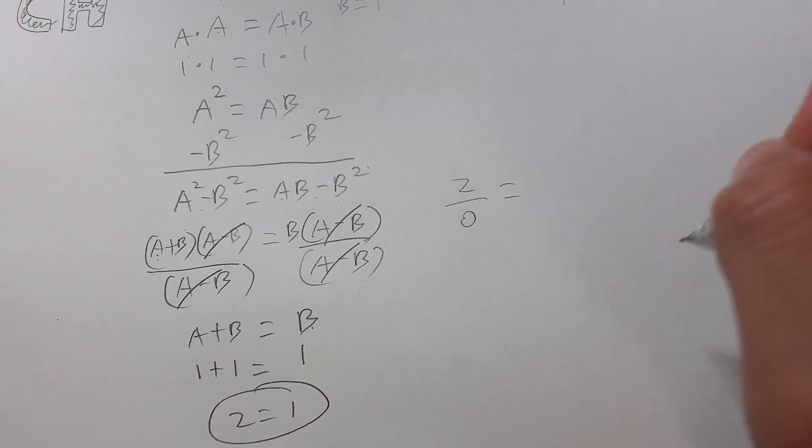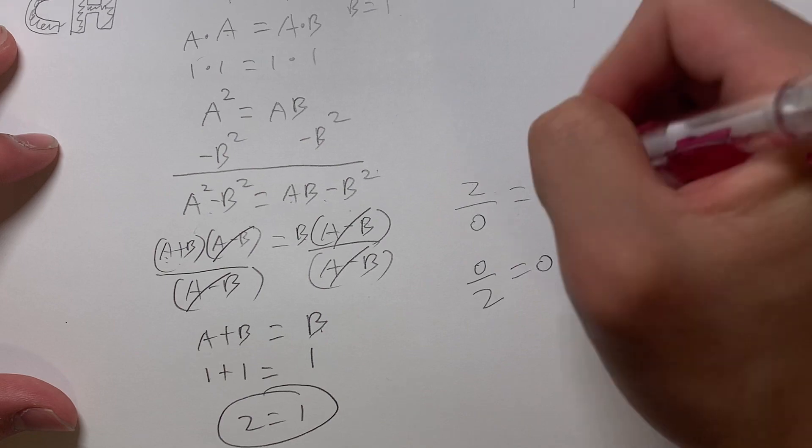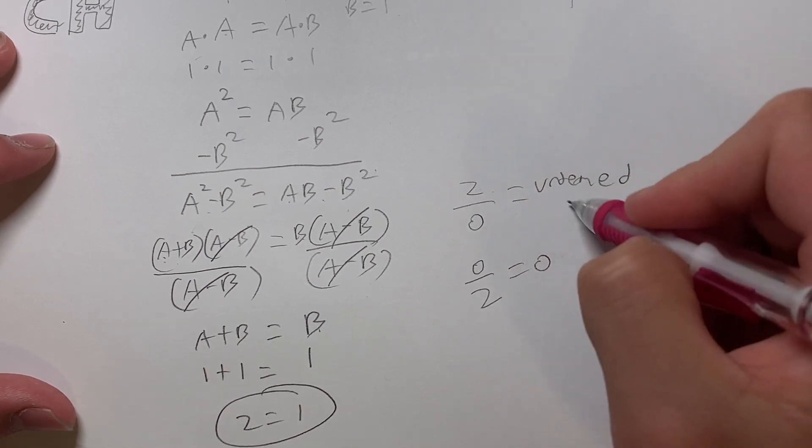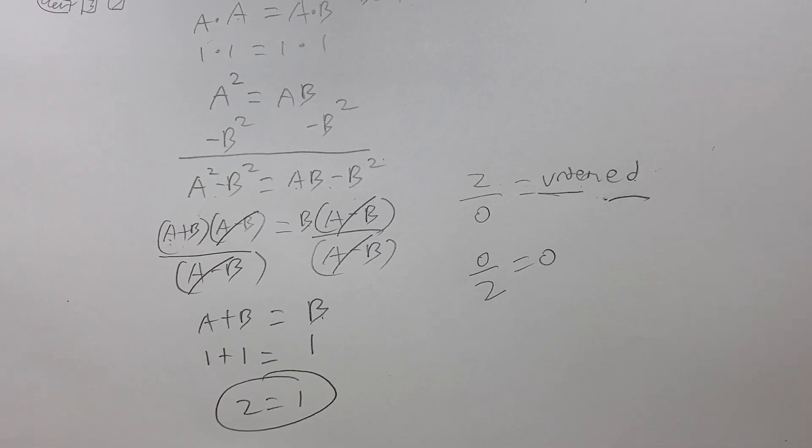Most people would say it's equal to 0, right? That's wrong. 0 divided by 2 is 0. 2 divided by 0 is undefined. And undefined means that you can't divide any number by 0. So where did I divide by 0?